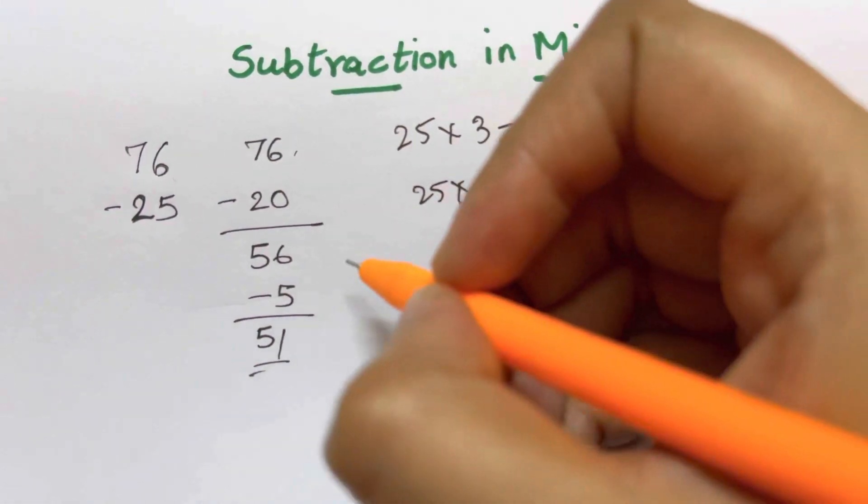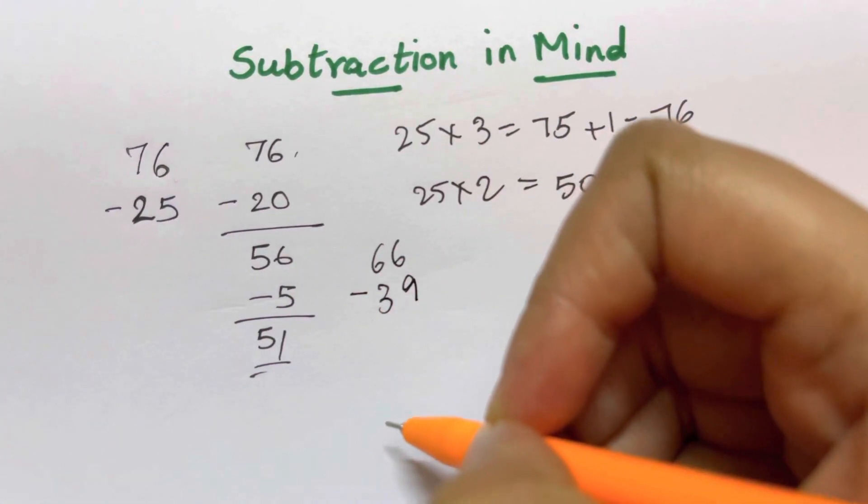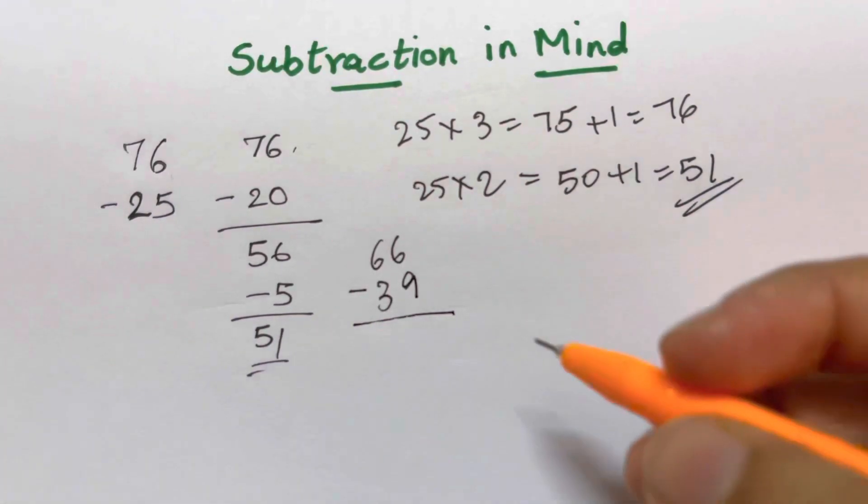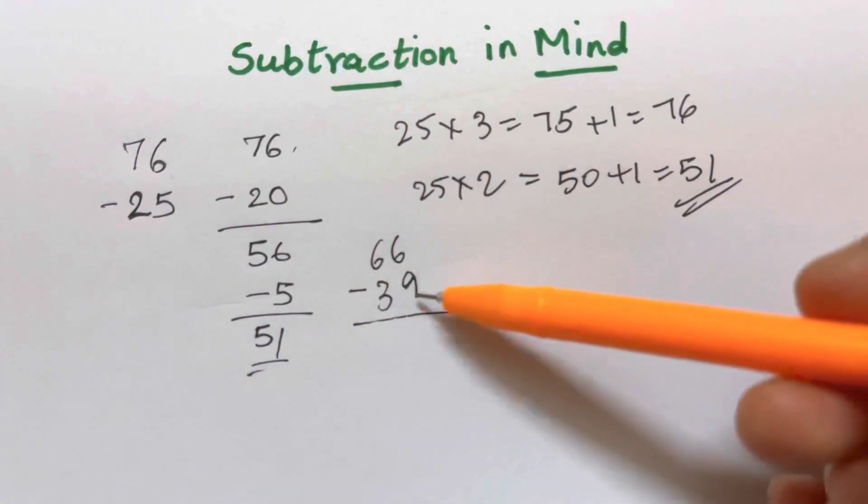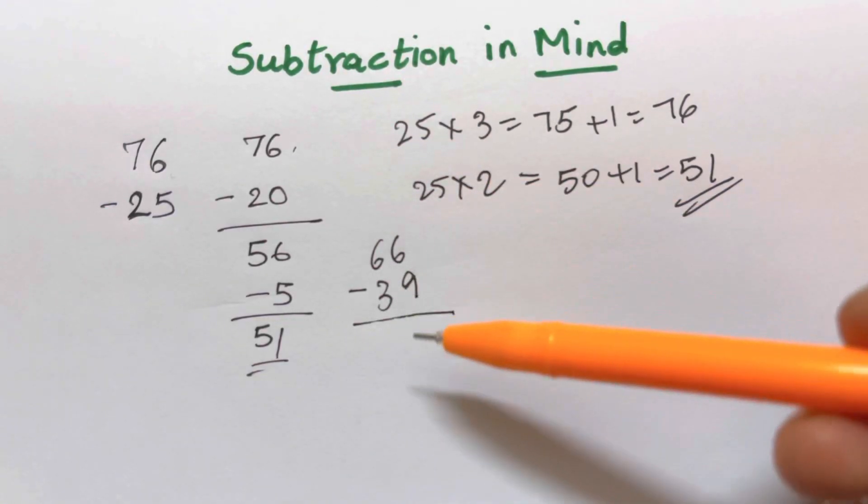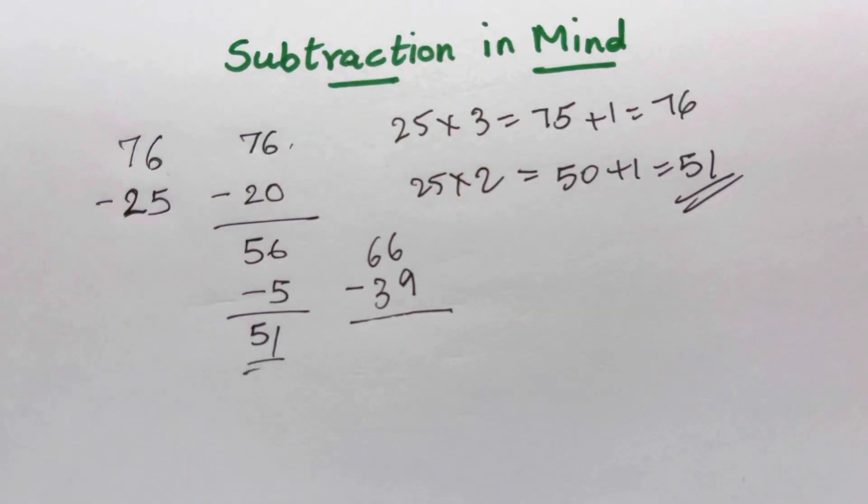For example, if you have 66 minus 39, so what are you going to do for this one? 66 minus 39, the regular way, 6 minus 9 you cannot do, so you carry over and then you need a pen and paper. So, how are you going to do it in mind?